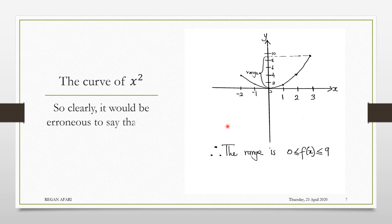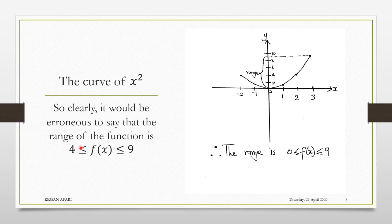Clearly, it would be erroneous to say that the range is between 4 and 9. Why? Because when we sketch or when we use all the domain values in question, we know that the correct range is between 0 and 9.